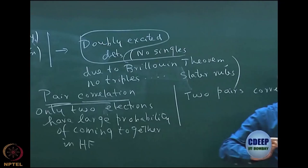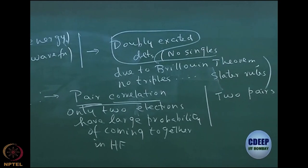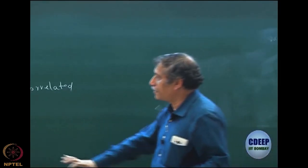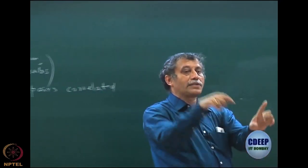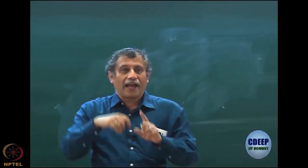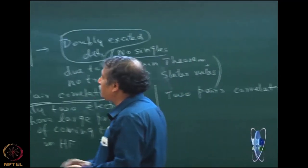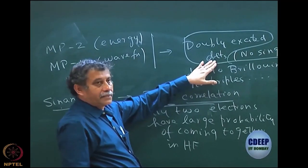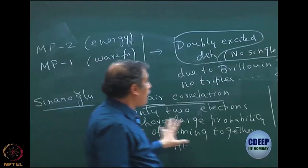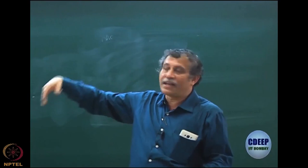The second argument Sinanoglu gave was that the Hamiltonian itself is a one- and two-particle Hamiltonian, so it is not possible for the Hamiltonian to correlate more than two particles. The pair correlation is the most dominant term. Every time we talk of correlation, please understand that means the probability of avoiding — when they come close together. In Hartree-Fock, which is an uncorrelated description, there is a chance of two particles coming close together because Hartree-Fock allows at least anti-parallel spins to be paired together, and those two particles have to be correlated when you go beyond Hartree-Fock.